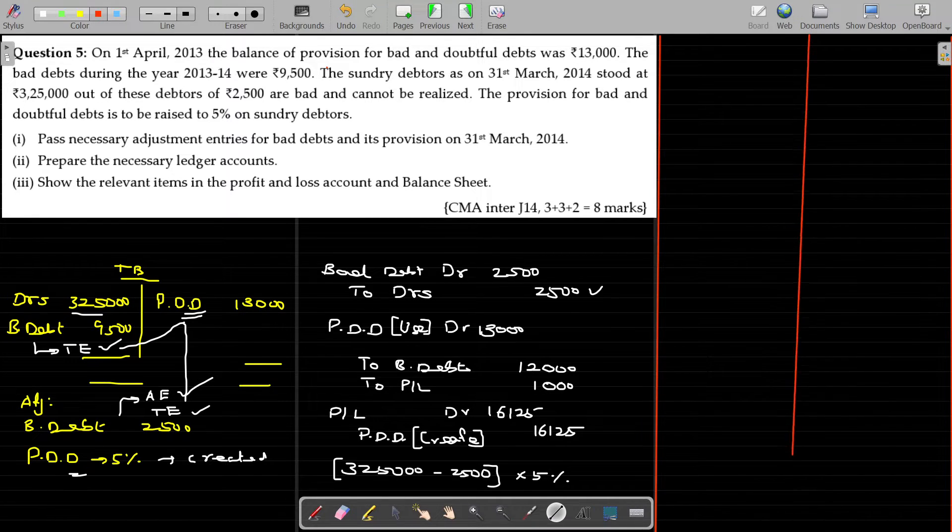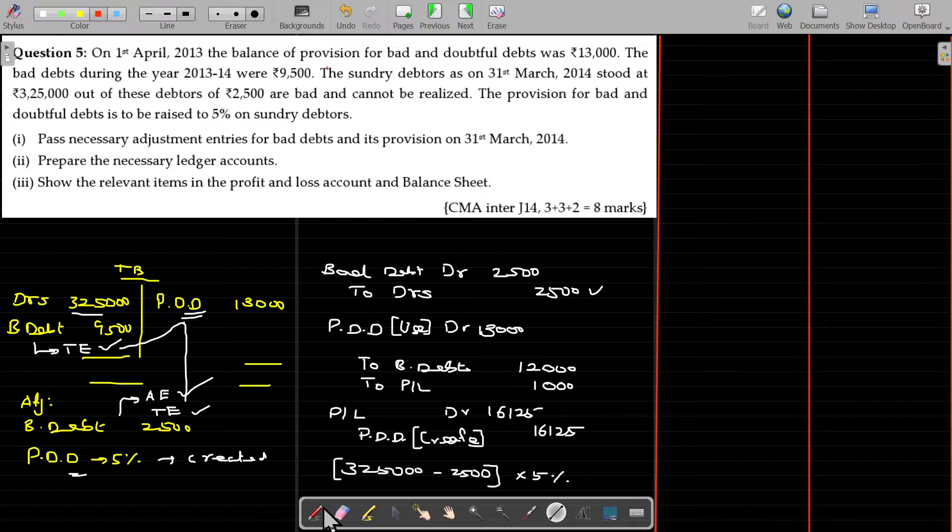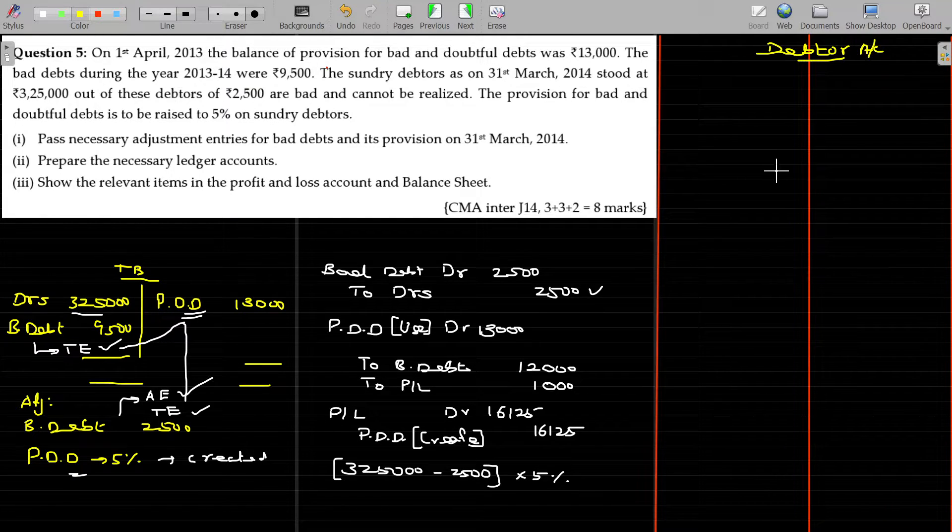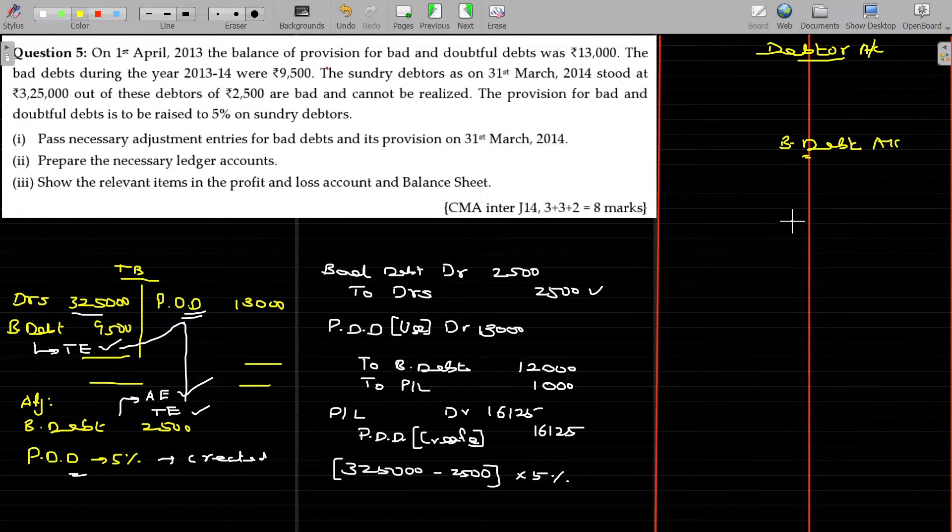So I am going to open all the concern ledger. Debtors account, debtors account. Bad debt account, bad debt account. Provision for doubtful debt account.